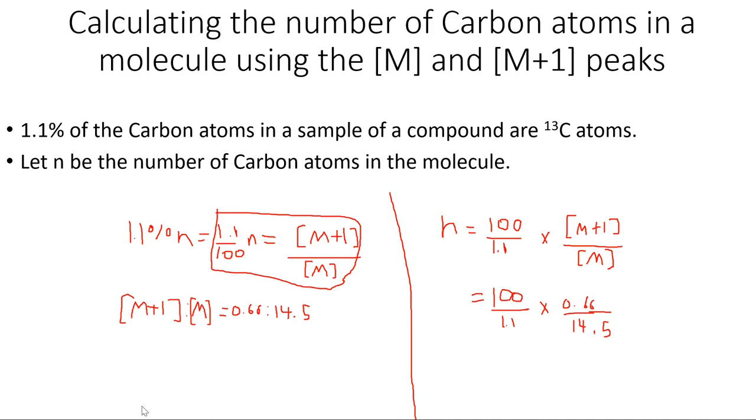Using the ratio of the relative abundances, I can use my calculator. It's 100 times 0.66 divided by 1.1 times 14.5 in brackets.